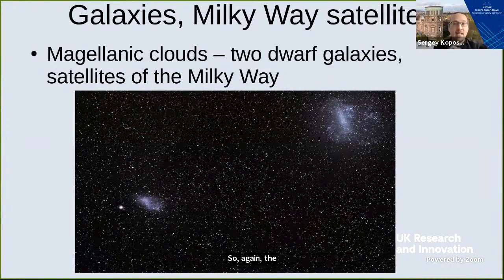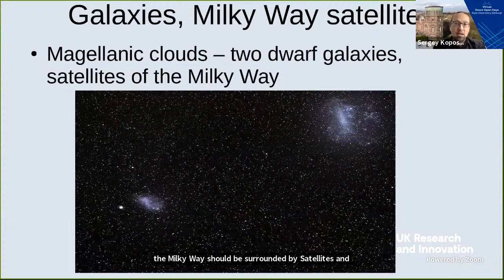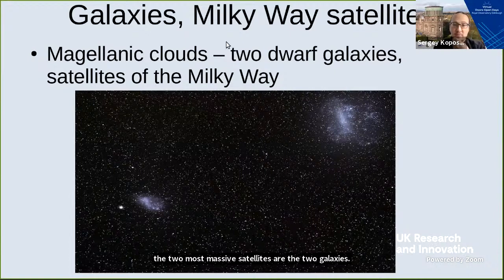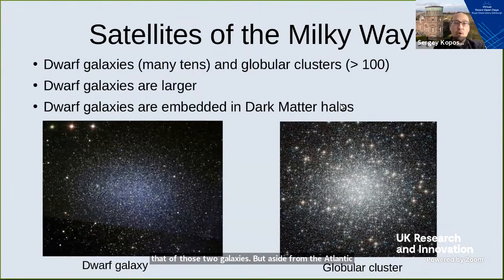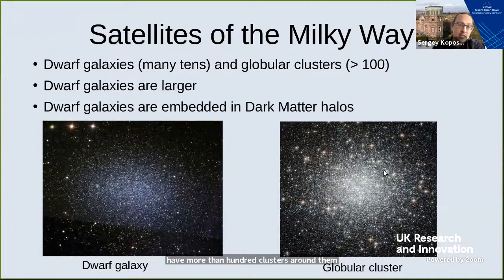The main point is that we believe the Milky Way should be surrounded by satellites. The two most massive satellites are the two galaxies called the Magellanic Clouds. Aside from the Magellanic Clouds, there are a large number of either dwarf galaxies or globular clusters. We have more than 100 clusters around the Milky Way and many tens of dwarf galaxies.